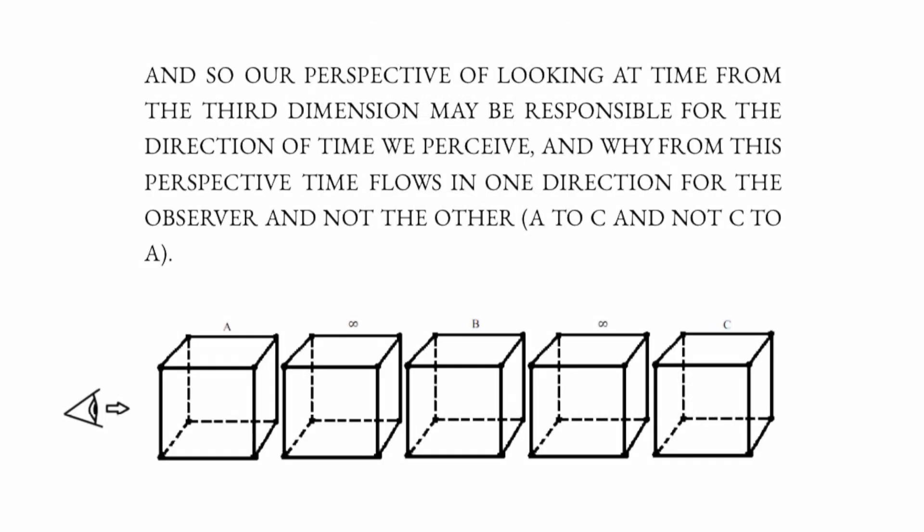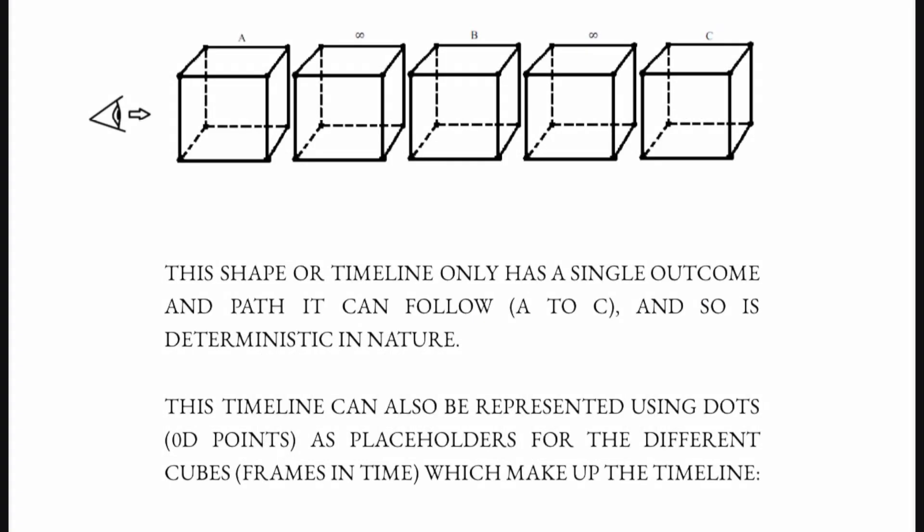Our perspective of looking at time from the third dimension may be responsible for the direction of time we perceive, and why from this perspective time flows in one direction for the observer and not the other — A to C and not C to A. This shape or timeline only has a single outcome and path that can follow, A to C, and so is deterministic in nature.